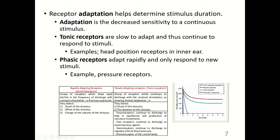Phasic receptors show rapid decline in the frequency of discharge with constant stimulation. Examples are the Pacinian corpuscles, which sense deep pressure. They detect the onset of the stimulus, the offset of the stimulus, and the change in velocity of the stimulus. This means your skin will adapt to pressure so you're not constantly irritated.